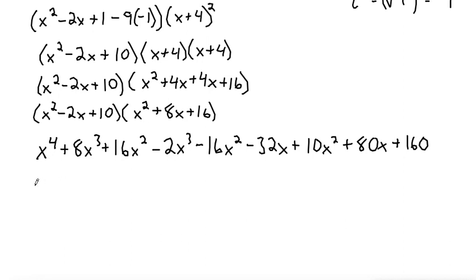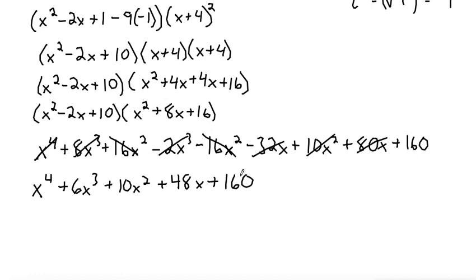From here we just need to combine like terms. Bring down the x to the fourth because there's no other x to the fourths. We have an 8x cubed and a negative 2x cubed, so those combine to make 6x cubed. We have a 16x squared and a minus 16x squared, so those can directly cancel out. But then we also have a 10x squared, so we'll bring that one down. Then we have a negative 32x and an 80x, that makes plus 48x. And then bring down the plus 160. So there we go. So there's our function written in standard form. And you typically just write f of x equals, and then you write your function in standard form. And that should finish out this problem.